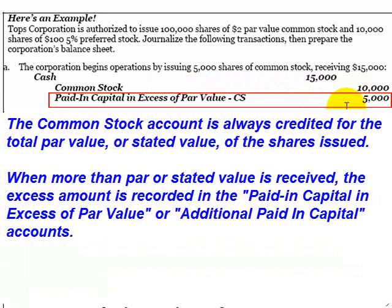If our stock is no-par stock, then there can't be a paid-in capital in excess of par value account. If our stock happens to have a stated value instead of par value, then the credit to common stock goes for the stated value of the shares, and this account would be called paid-in capital in excess of stated value common stock.